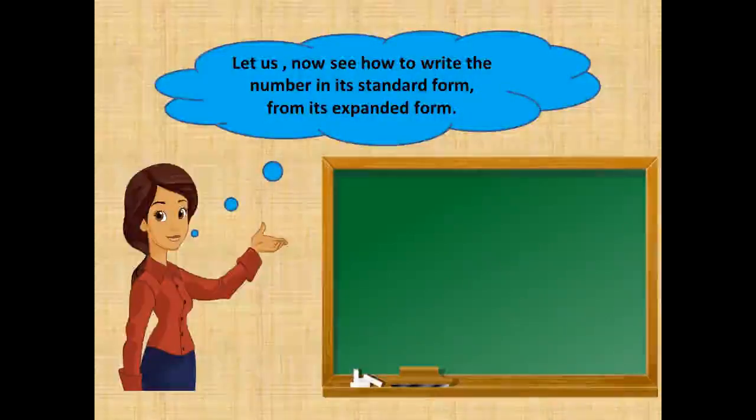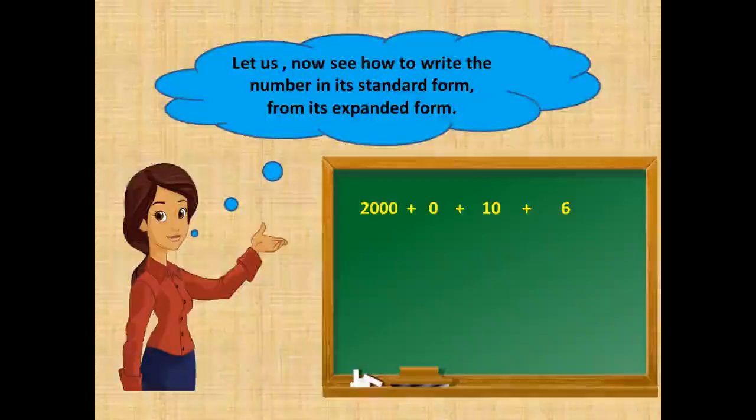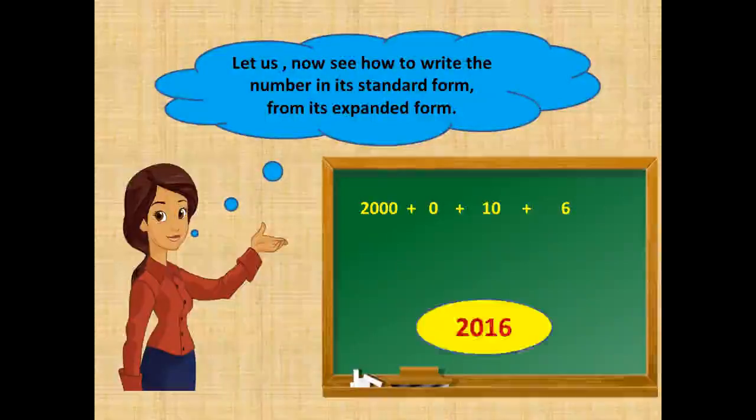So here we have the number which says 2,000 plus 0 plus 10 plus 6. We write the number as, we take 2 in the thousands place,